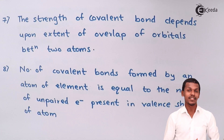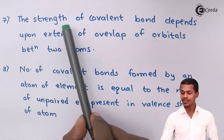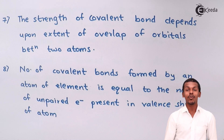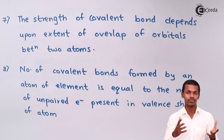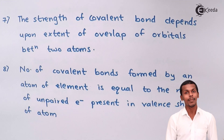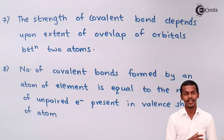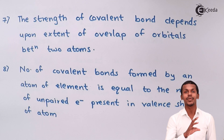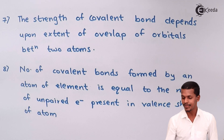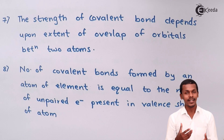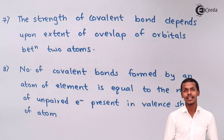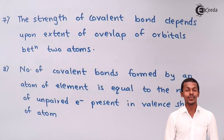The seventh postulate says: the strength of a covalent bond depends upon the extent of overlap of orbitals between the two atoms. The more the overlapping between orbitals of two different atoms, the stronger the bond will be — more energy will be required to break it. The extent of overlapping also depends on how the orbitals are oriented. There are two types of overlapping: lateral overlapping and head-on overlap. These will be discussed in the next lecture.